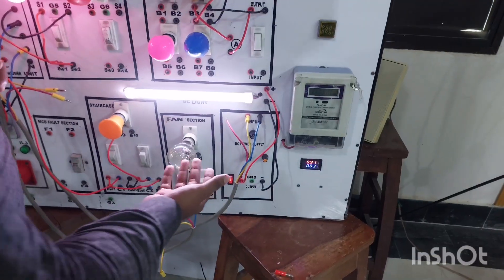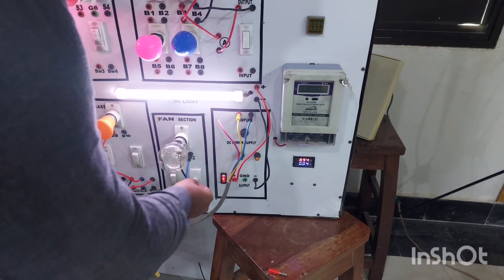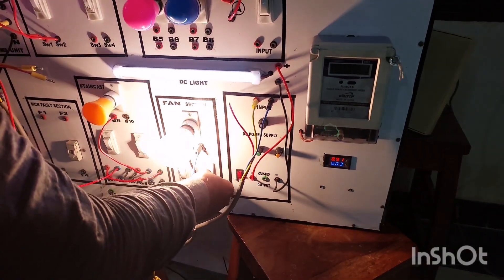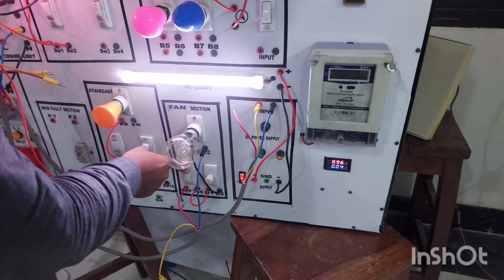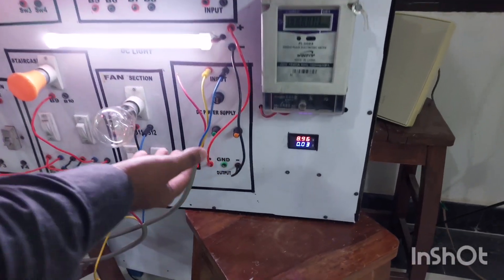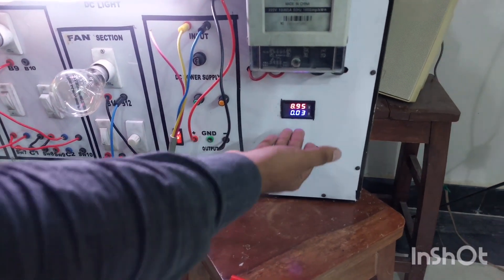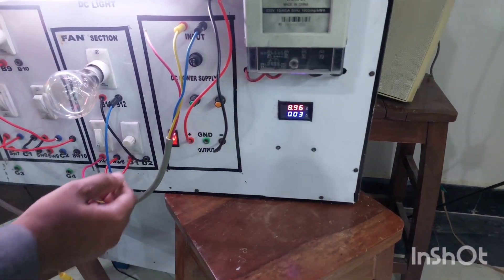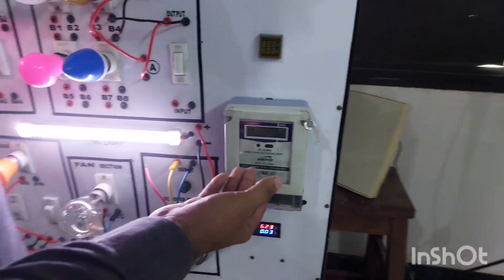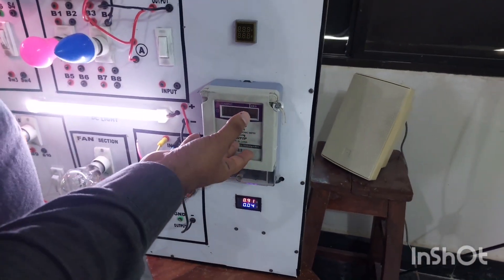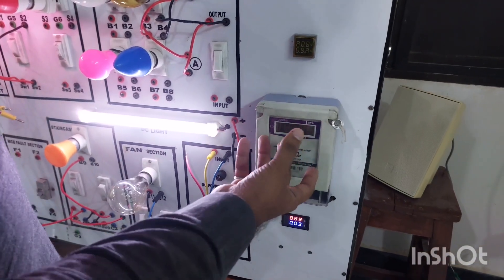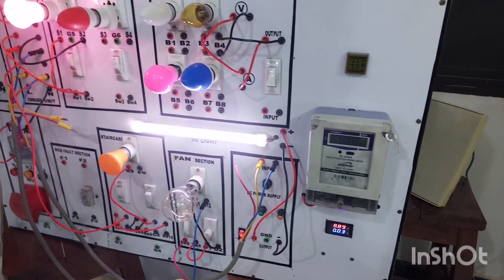This is our fan section, which we can operate at different speeds. After this, we have our DC power supply with metering. We have used a single-phase energy meter here. These are our units where we can operate and demonstrate the power supply. Thank you.